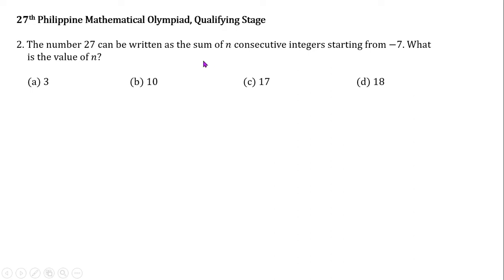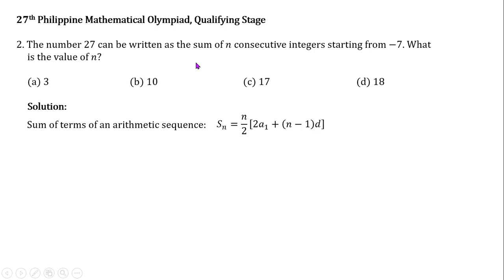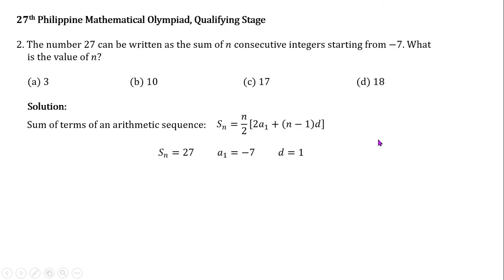This is clearly an arithmetic sequence problem. We can use the formula for the sum of the first n terms of an arithmetic sequence, where S sub n is the sum of the n terms, n is the number of terms, A sub 1 is the first term, and D is the common difference. So S sub n is 27, A sub 1 is negative 7, and the common difference D is 1 since the integers are consecutive. Let us plug this into the formula.